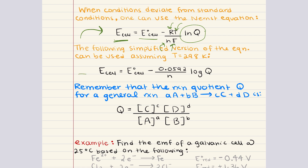A simplified version of the equation can also be used assuming temperature is equal to 298 Kelvin. The simplified version brings together R, the ideal gas constant, T at 298 Kelvin, and F, Faraday's constant, and converts the natural logarithm to the base 10 logarithm to make calculations easier. Remember that the reaction quotient Q equals the concentration of the products raised to their stoichiometric coefficients divided by the concentration of the reactants raised to their stoichiometric coefficients.